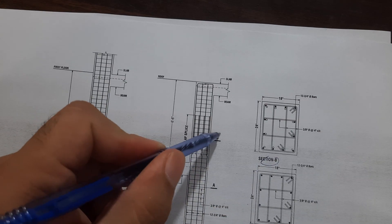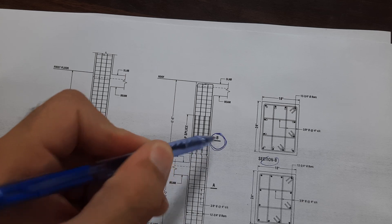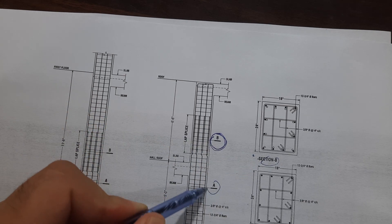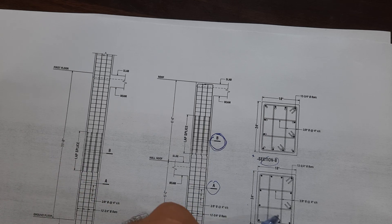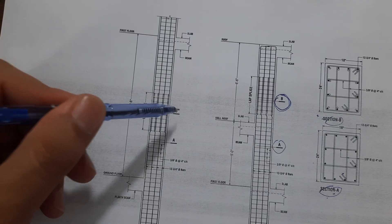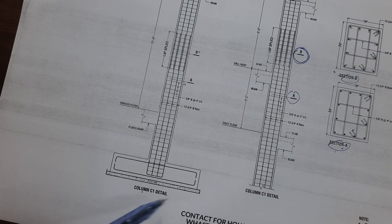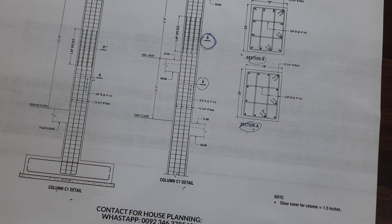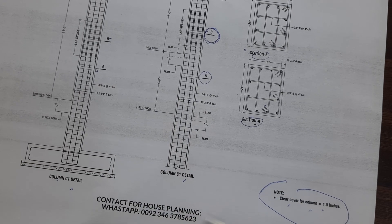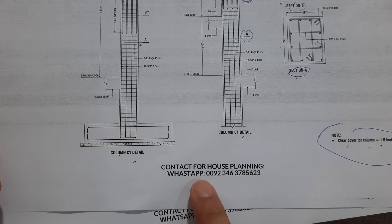You can see the lapping length — this is Section B, so you can discuss this one. For Section A, you can discuss this one. Here you can see Section B and Section A for column C1 detail. The clear concrete cover is 1.5 inches, as you can see clearly.